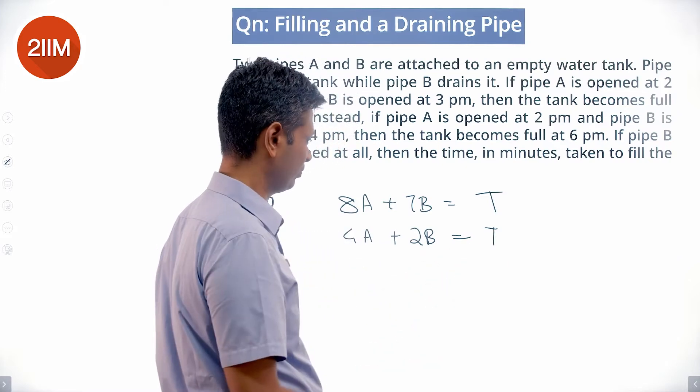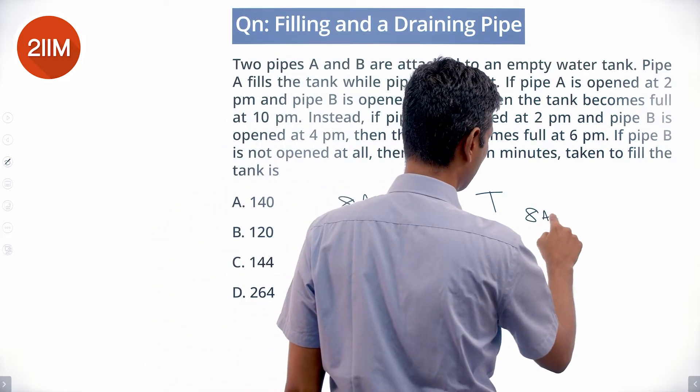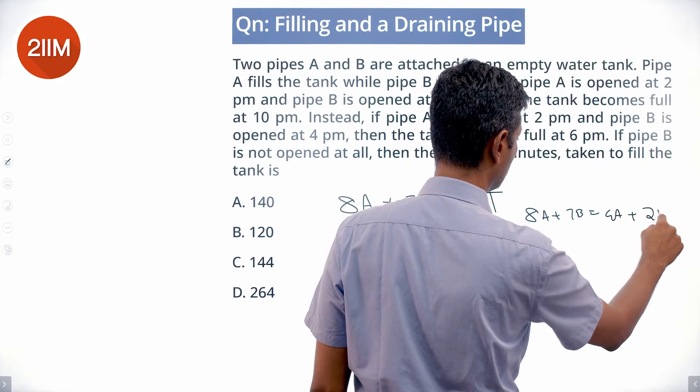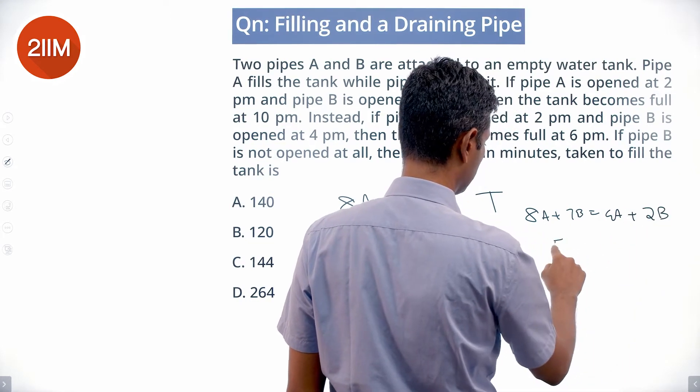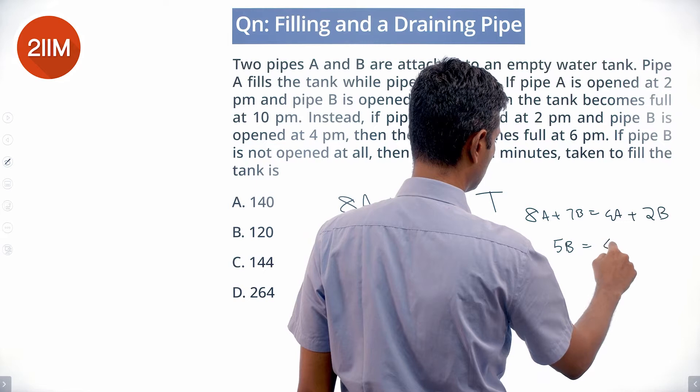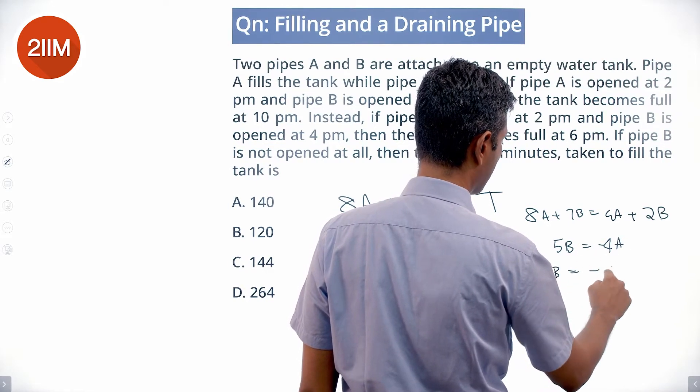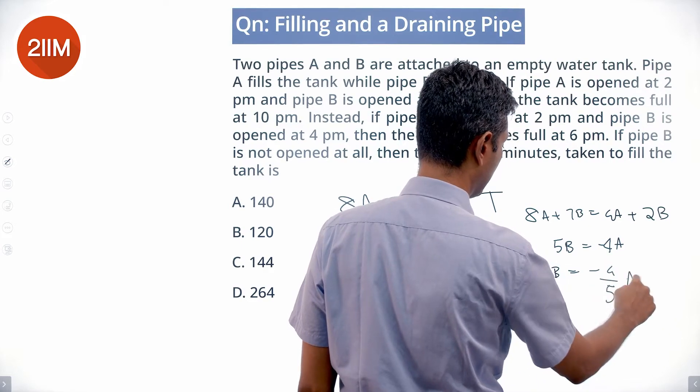8A plus 7B equals 4A plus 2B, so 4A equals minus 5B, or B is minus 4/5 A.